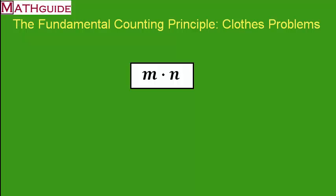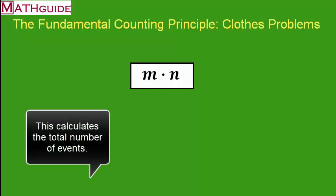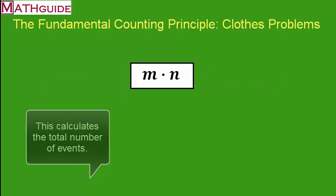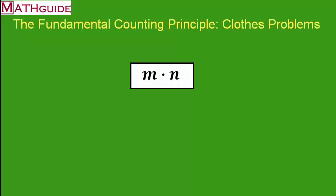The formula is M times N for the total number of events. M stands for the total number of outcomes of the first event. N stands for the total number of outcomes for the second event. So M times N will be the total number of outcomes of the two things happening together.